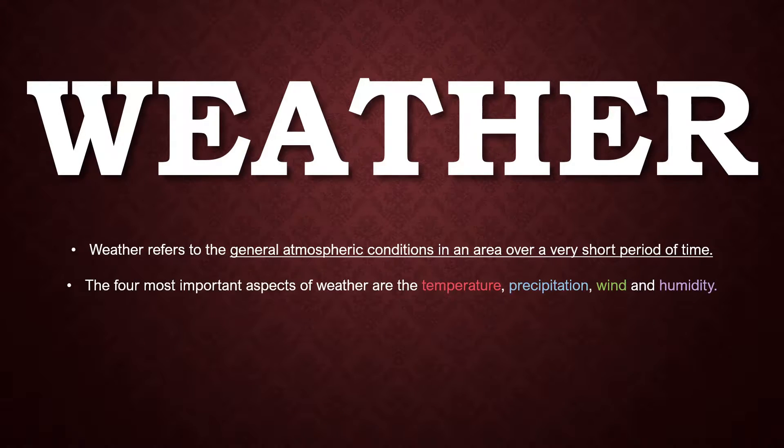Those four aspects are: temperature, precipitation, wind, and humidity. Now let's analyze what each of these terms means.